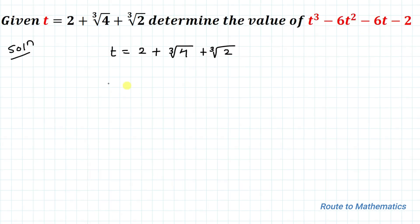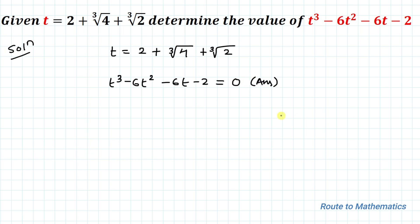So what are we asked to find? We are asked to find t cubed minus 6t squared minus 6t minus 2, and thus our answer for the given expression is 0. The answer of the given expression is 0. I hope you have understood the solution.